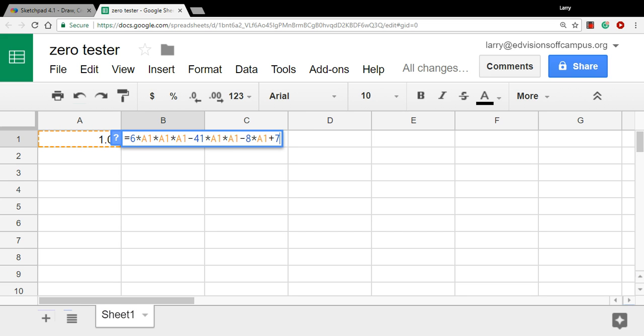And this cell, I've typed in a formula. You can see I've got six times whatever's in A1 times whatever's in A1 times whatever's in A1. A1 is like X. So this is 6X to the third right there. This is negative 41X squared. This is negative 8X. And this is plus 7. So this calculates the value of that function. So we plug in the zero here. If we get a zero, the zero candidate, if we get the number zero in this cell, that means we've found a zero.